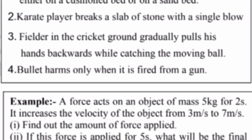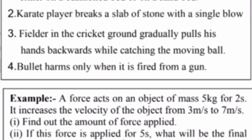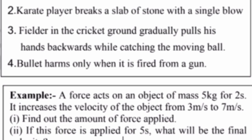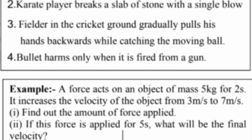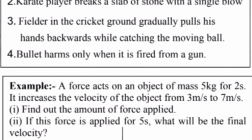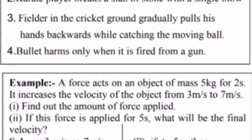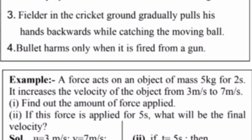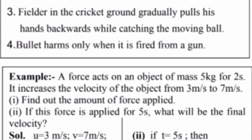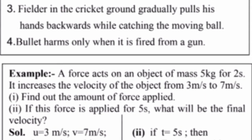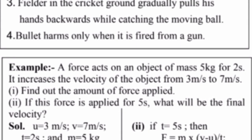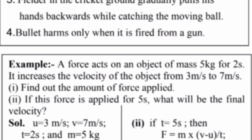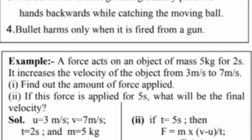Fielders in the cricket ground gradually pull their hands backward while catching the moving ball to reduce momentum and force, so they get hurt less. Bullet harms only when it is fired from a gun because the gun gives it very high velocity, so momentum becomes very large. If you throw a bullet by hand, nothing happens because speed is not there.